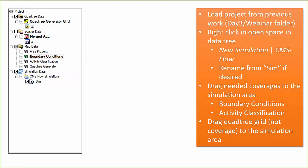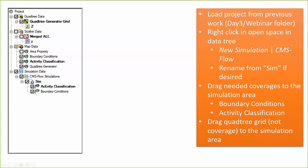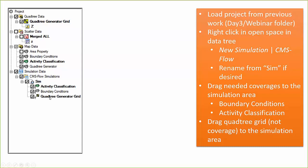You can change the name of the simulation to whatever you want. If you're doing multiple simulations — existing conditions or several alternatives — you'd want to name these things appropriately so you know which data goes with which. I'm just going to leave it named 'sim' for right now. The next step is to pull your boundary conditions and activity classification down into the simulation — just grab those and drop them under the word 'sim'. Then save your project.